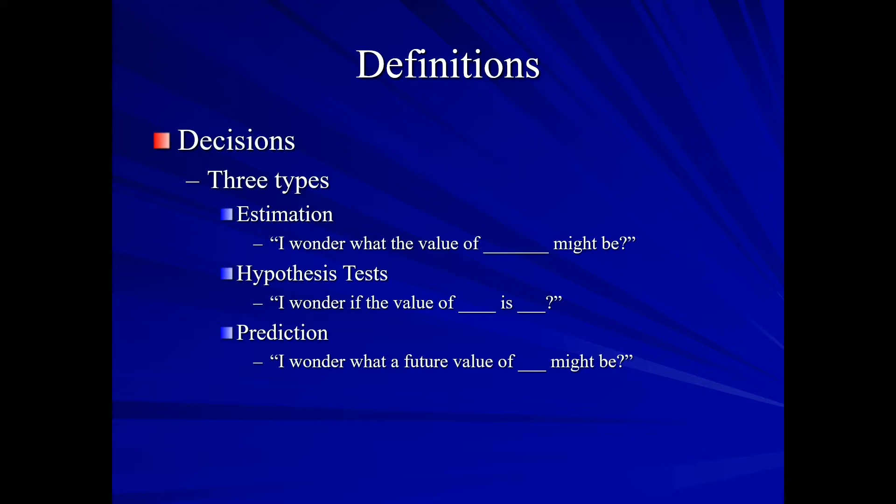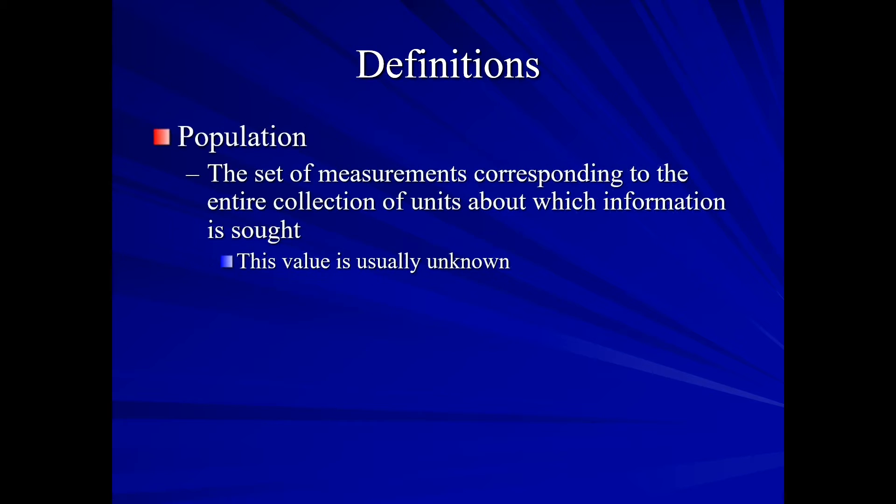There are three types of decisions we can make. The first type is estimation. So, I wonder what the value of the mean age of students in a particular university, and we wonder what the value of this mean age might be. Well, we need to estimate that. Our hypothesis tests. So, here I wonder if the value of that mean age is some specified value. In other words, we have an original value in mind. And then prediction. I wonder what a future value of this mean age might be.